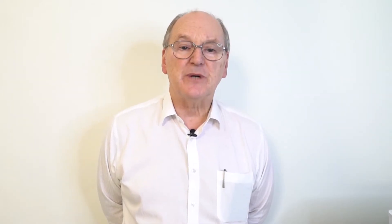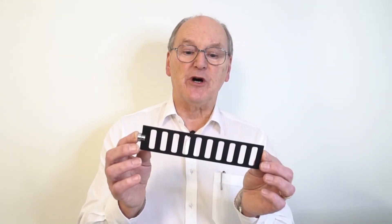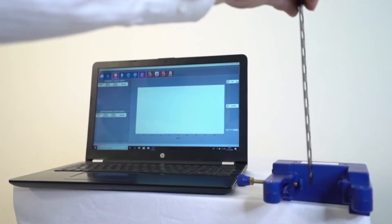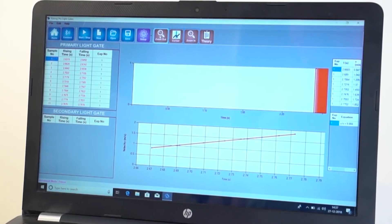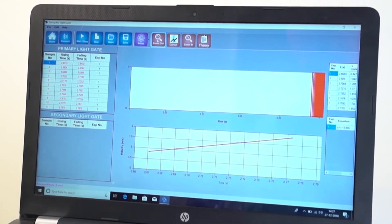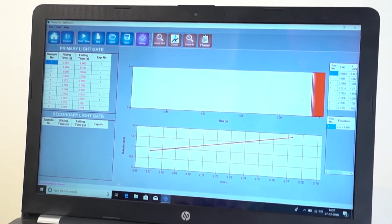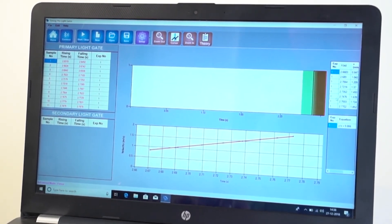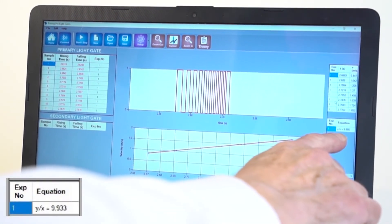The light gates and software have sophisticated facilities for determining G by free fall. A simple method is to drop a fence mask through the primary light gate. Acceleration is captured and calculated from a series of interruptions. We can zoom in on the graph and we can look at the value of G.